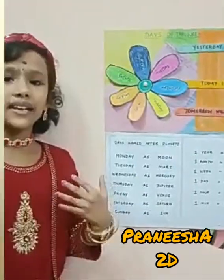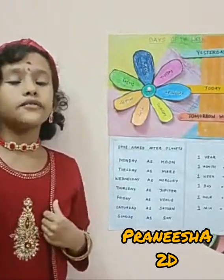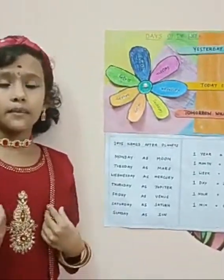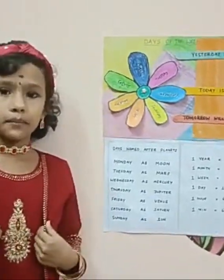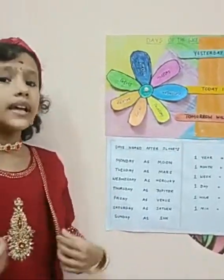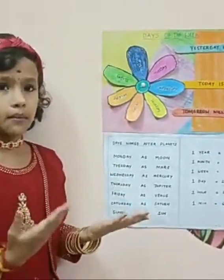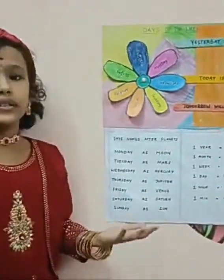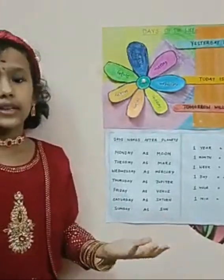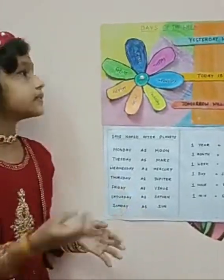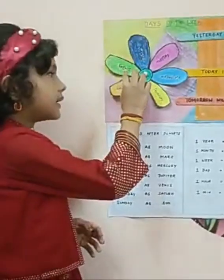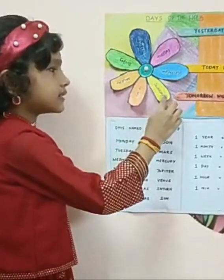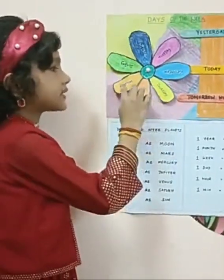My name is P. Pranisha of 2nd Standard, D Section. My school name is Corman Public School. I am going to explain about days of the week. How many days are there in a week? 7 days. What are they? Sunday, Monday, Tuesday, Wednesday, Thursday, Friday, Saturday.